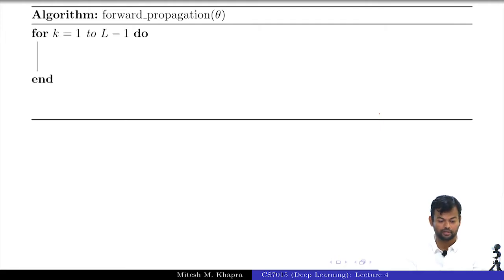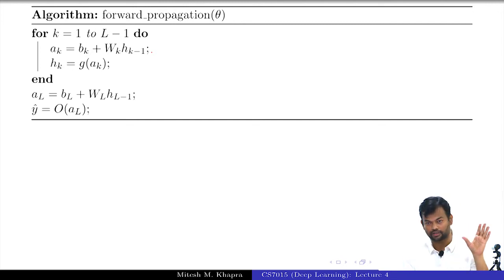So, forward propagation is simple. For all the hidden layers, that means from layer 1 to layer L minus 1, what will I do? Give me the code, a_k is equal to... good. And what is h of 0? You are starting the loop from 1, so you will need h of 0, that is x. And then you will have a special treatment for the output layer and your final output will be whatever output function you use. This makes sense, you can write this in python. You will have to write this in python.